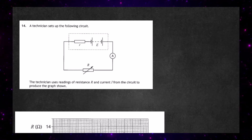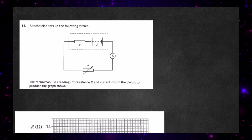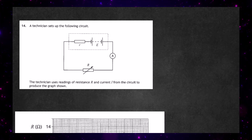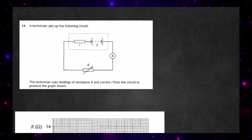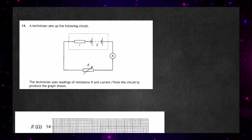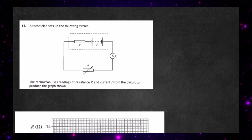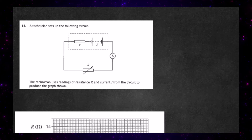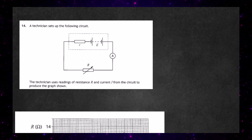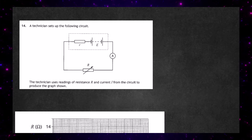Question 14 from Paper 2 of the 2024 Higher Physics Examination from the SQA. A technician sets up the following circuit. It has a dotted box around it, which means we're looking at an EMF and the internal resistance of that battery. It's attached to an external resistor R, which is a variable resistor, and it has an ammeter to measure the current.